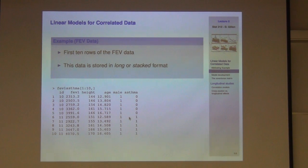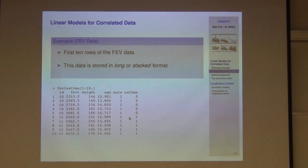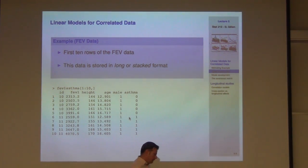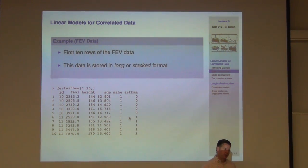A student asks whether time needs to be more explicit than age. You could easily create an explicit time period variable — it's just a simple one-to-one transformation of age at baseline.